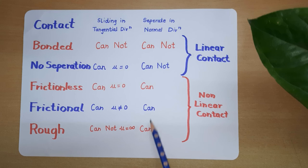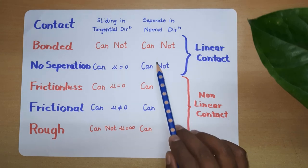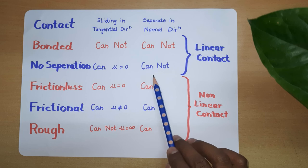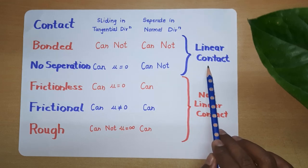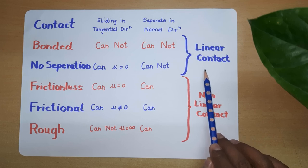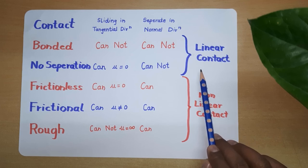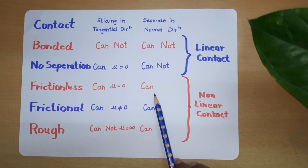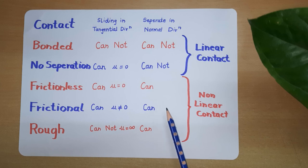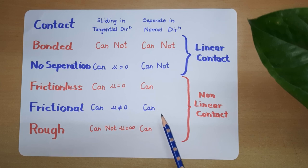If you observe, the first two contacts — bonded and no separation — cannot separate from each other. That's the reason they are called linear contacts, where the stiffness matrix will not vary over the period of loading. But in the case of the remaining three contacts, bodies can separate in the normal direction, so the stiffness matrix can vary over the period of loading. That's why they are called nonlinear contacts.